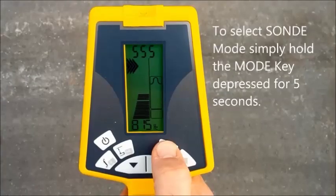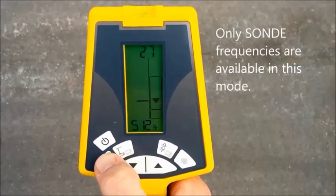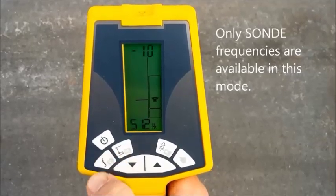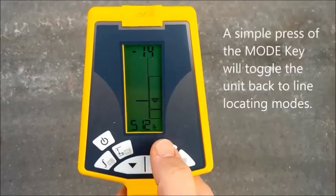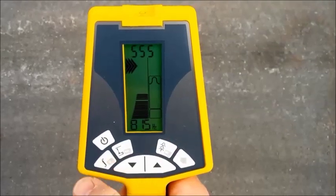To select the sound locating mode, simply depress the mode key for 5 seconds. Only sound frequencies are available in this mode. To exit the mode, simply press the mode key and it will toggle back to the normal line locating modes.